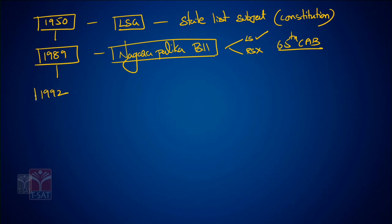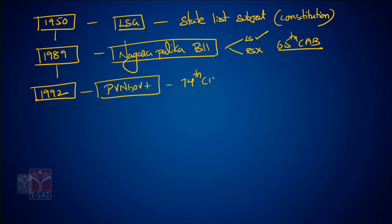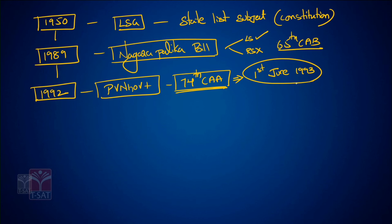In 1992, the PV Narasimha Rao government initiated and passed the 74th Constitutional Amendment Act, which came into force on 1st June 1993.